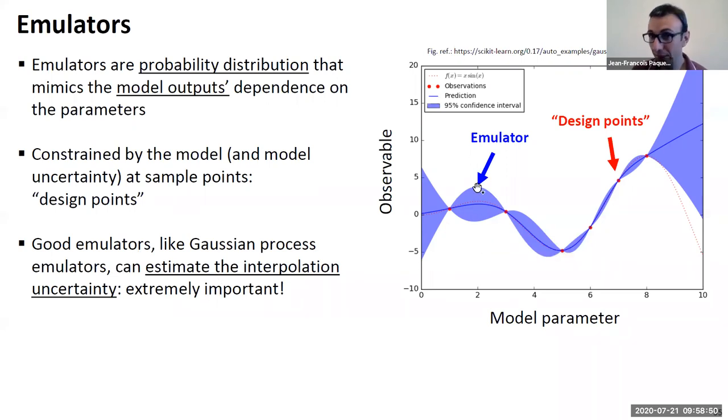You need an emulator that does this, that takes it into account. And Gaussian process emulators are excellent because they can take into account this interpolation uncertainty. And at the same time, they can take into account the uncertainty that you have on any one of your design points.